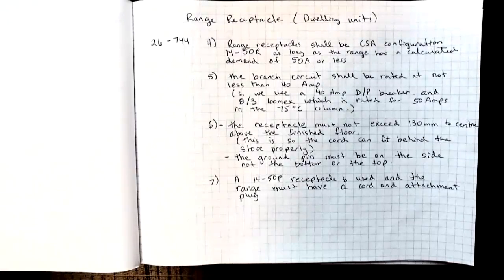Sub-row 5: the branch circuit shall be rated at not less than 40 amps, so we use a 40 amp double pole breaker and 8/3 Lumex, which when we check in Table 2, is rated for 50 amps in the 75 degree column.